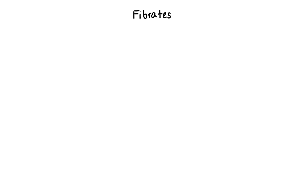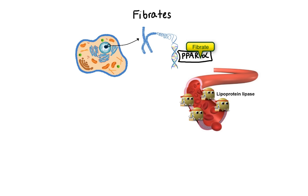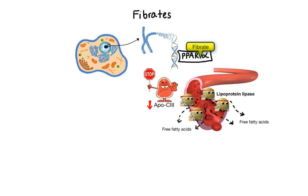The next group of lipid-lowering drugs is fibrates. Fibrates work primarily by activating a nuclear transcription receptor called peroxisome proliferator activated receptor alpha, or PPAR alpha for short. PPAR alpha is found in metabolically active tissues, such as liver and adipose tissue. The binding of fibrates to PPAR alpha induces activation or inhibition of certain genes that code for proteins involved in lipid metabolism. One of the main effects is increased expression of lipoprotein lipase, which increases the removal of triglycerides from circulation. Fibrates also decrease expression of ApoC3, which inhibits lipoprotein lipase activity, and increase expression of ApoA1 and ApoA2, which are major components of HDL, thus leading to an increase in its concentrations.